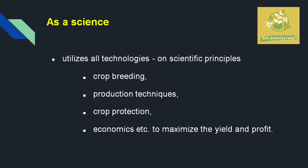While seeing agriculture as a science, by utilizing different technologies you can achieve higher quality food production. This includes crop breeding, production techniques, and using economics to maximize the yield and profit of a farmer in their land, without disrupting climatic patterns, making knowledge always available and suitable to farmers.